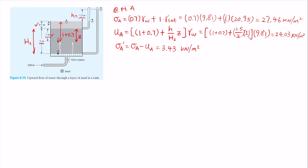Moving to point B, the total stress at point B includes the 0.7 meters of water above the soil layer times gamma water, plus 2 meters of saturated soil times gamma saturated (20.95). Plugging in those numbers, the total stress at point B is 48.05 kilonewtons per meter squared.